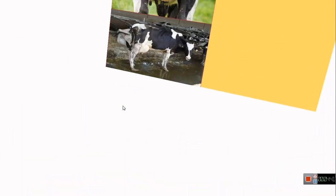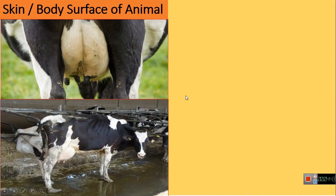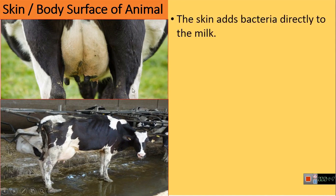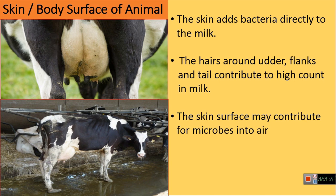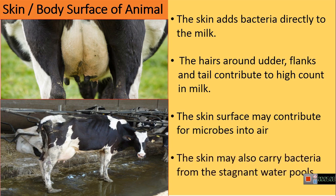The next source of microorganisms in the milk is the skin or body surface of the animal. The skin surface acts as a vehicle to add bacteria directly into the milk. The hairs around the udder, flanks, and tail contribute to a higher bacterial count in the milk. The skin surface may also indirectly contribute microorganisms to the air, especially Bacillus species. Skin also carries microorganisms from stagnant water pools.